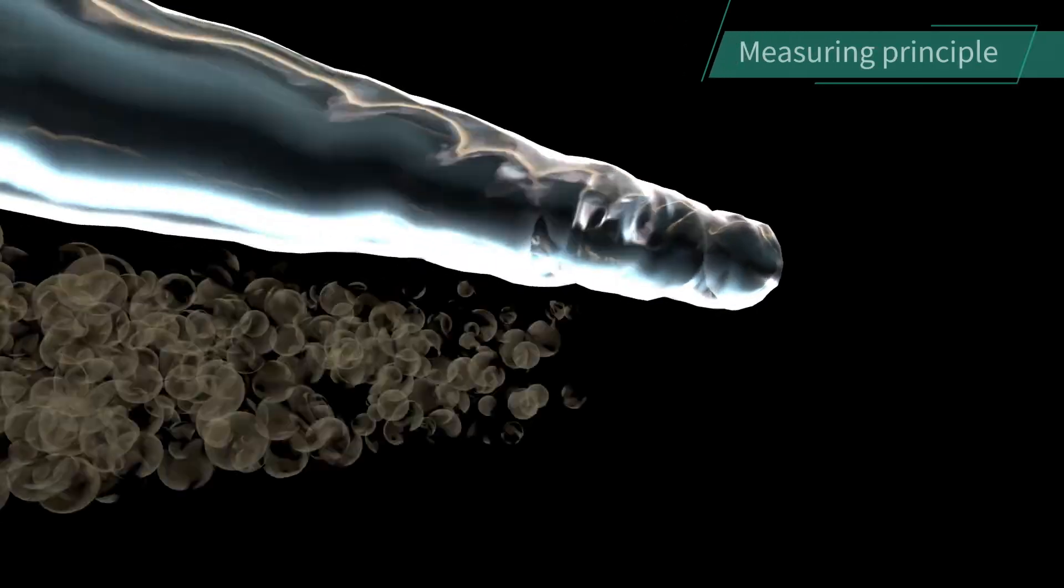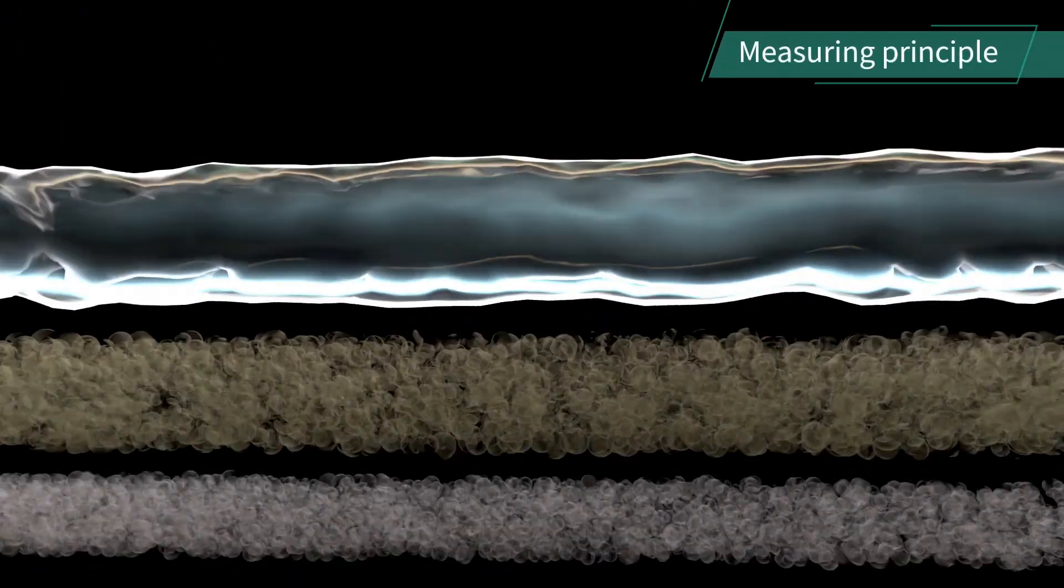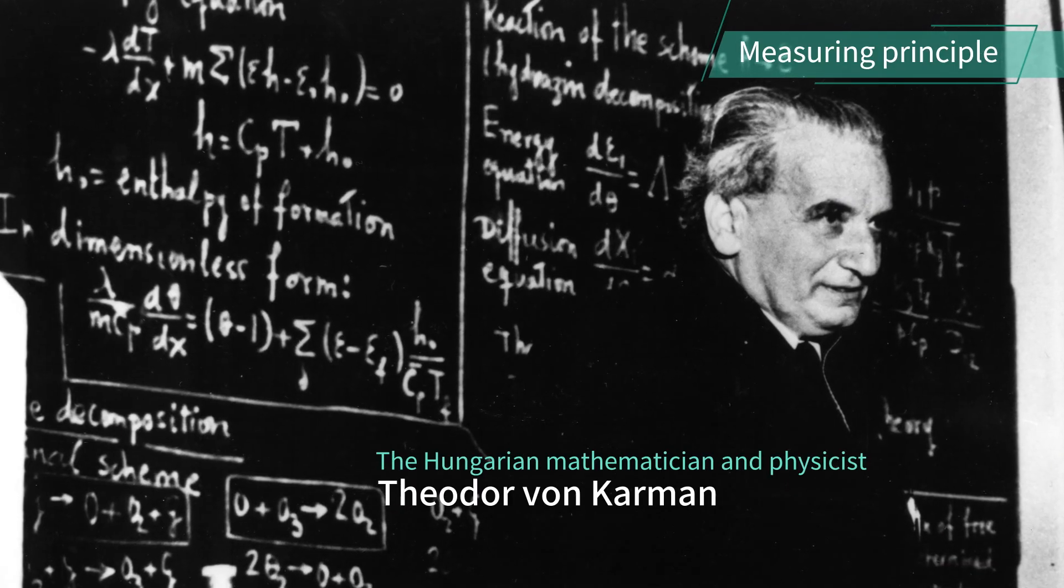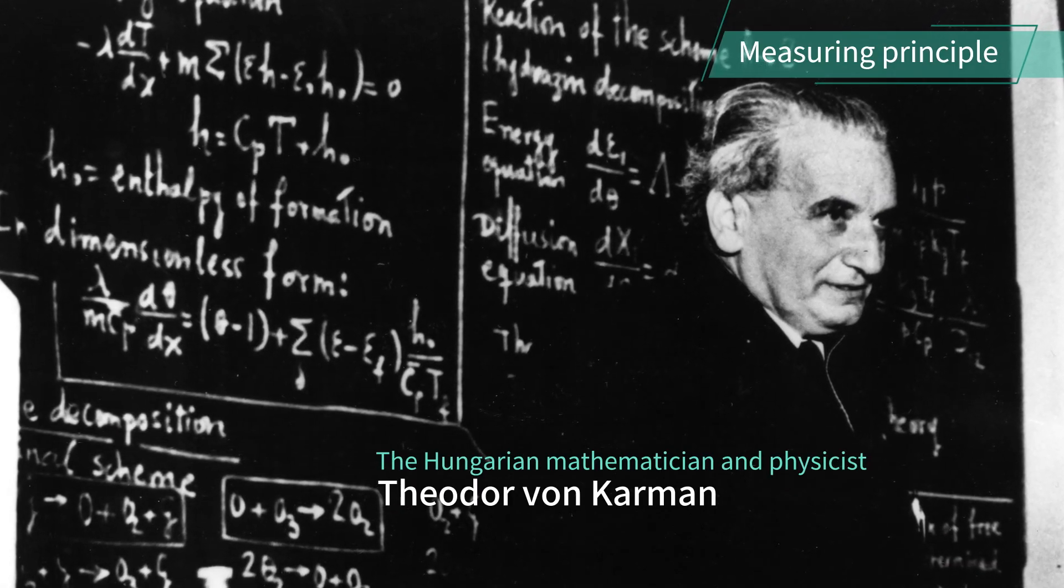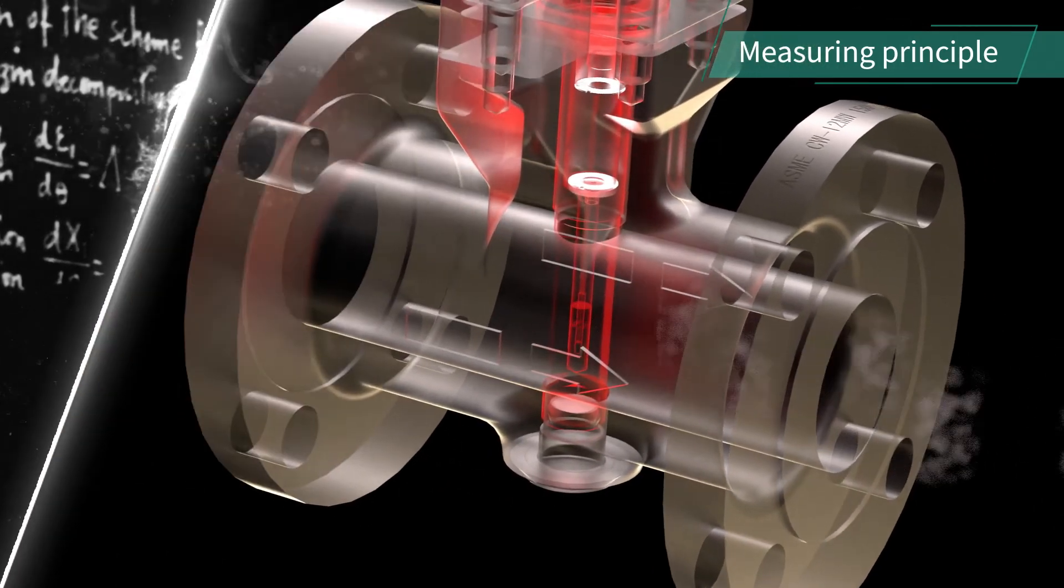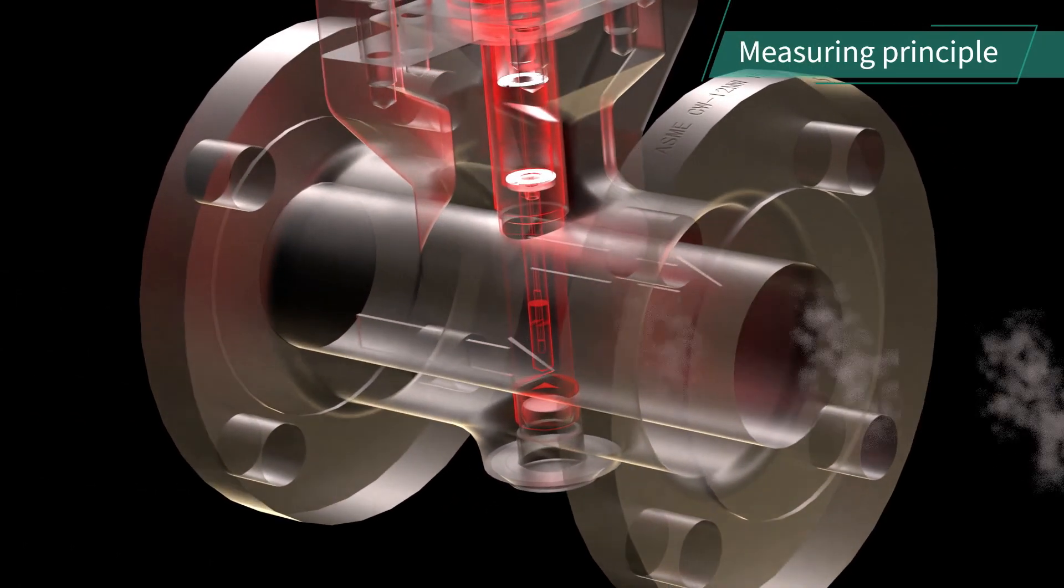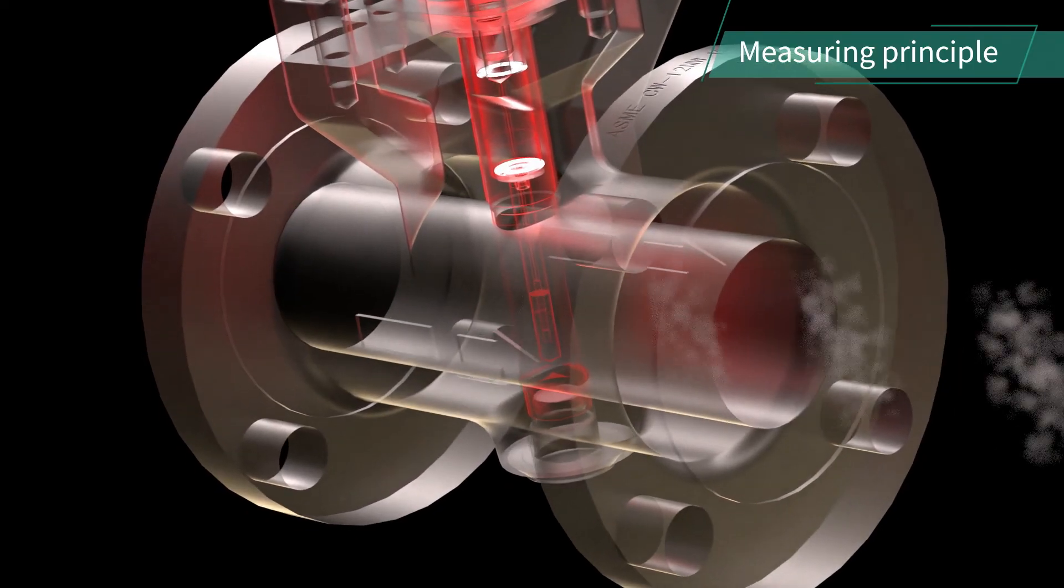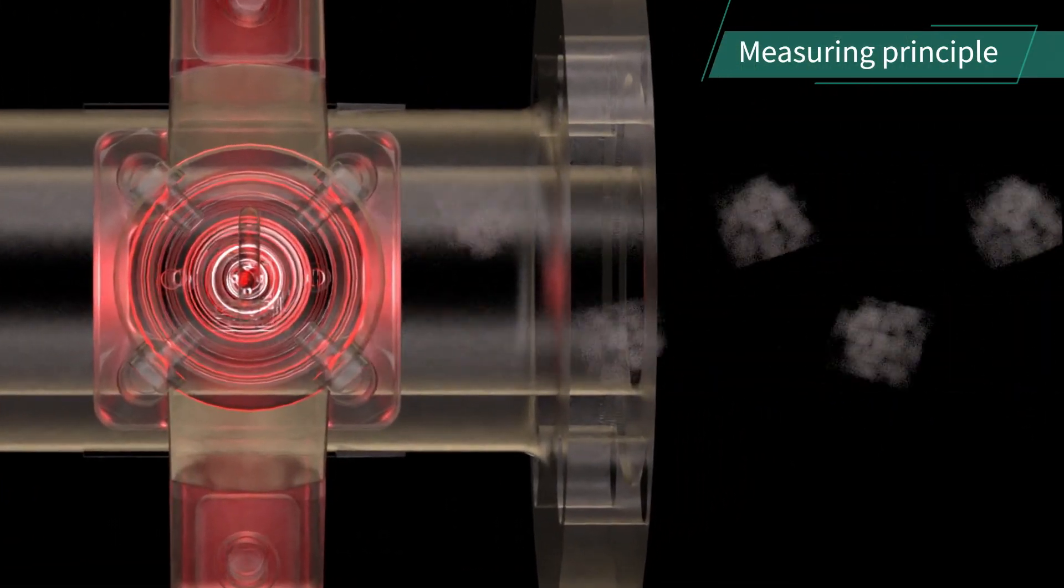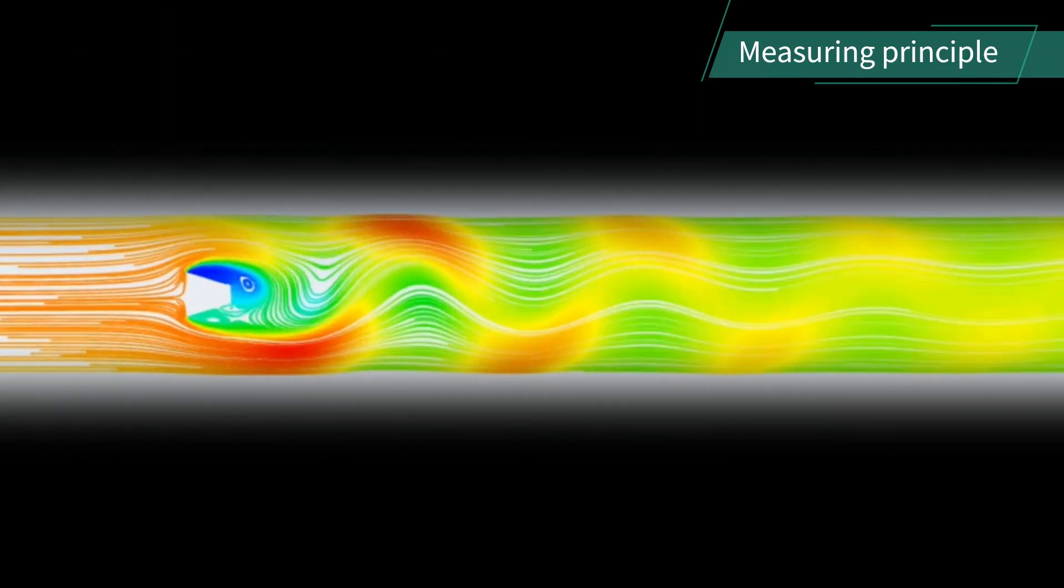Vortex Flow Meters can measure liquids, gases and steams. In the early 20th century, the Hungarian mathematician and physicist Theodor von Karman discovered the Karman Vortex Street which are alternating vortices proportional to the flow velocity downstream of an obstacle in a fluid. Flow rate is measured by counting the number of these Karman Vortex Streets.